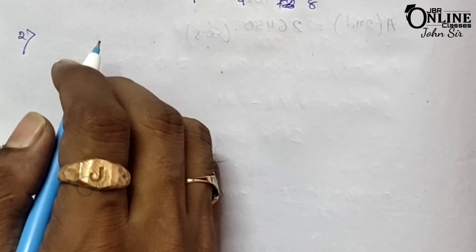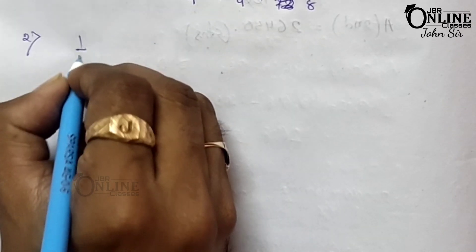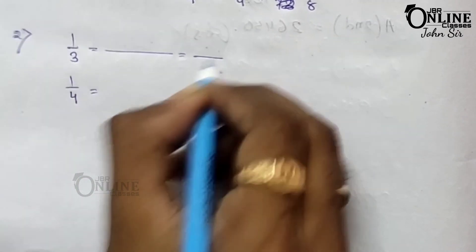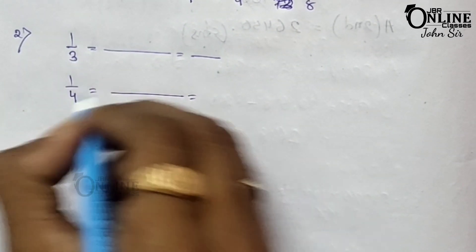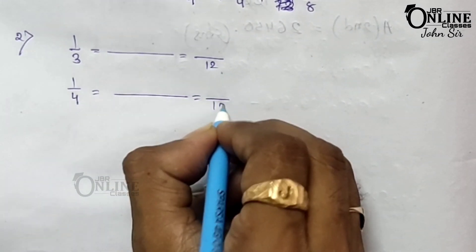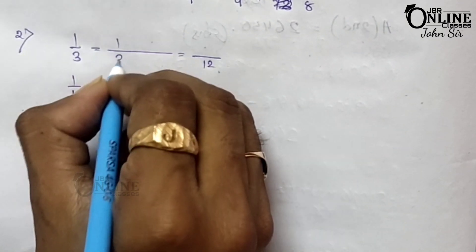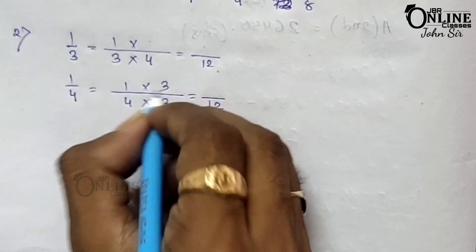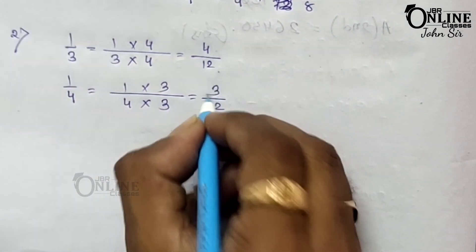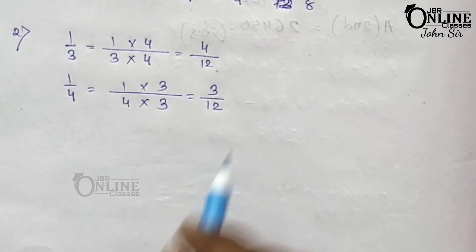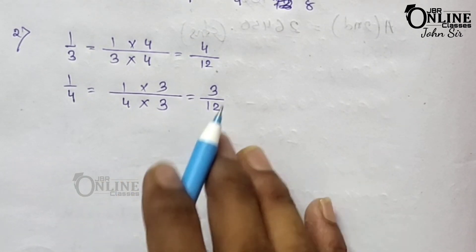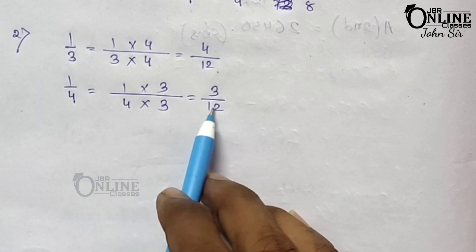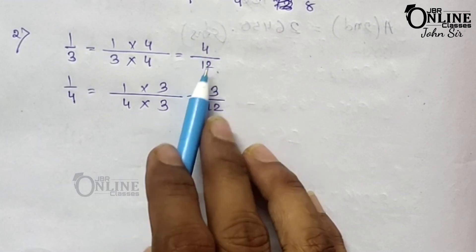Now number two: insert two rational numbers between 1 by 3 and 1 by 4. First you have to make the denominators the same. As 3 and 4 give LCM 12, write down 12. So 1 by 3 becomes 4 by 12, and 1 by 4 becomes 3 by 12. Now you have to find two rational numbers between 4 by 12 and 3 by 12. Here 3 by 12 is the smaller one and 4 by 12 is the greater one.